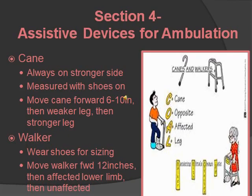For canes, always hold the cane on the stronger side — the mnemonic is 'COAL: Cane Opposite Affected Leg.' Measure with shoes on. When moving, advance the cane forward six to ten inches, then the weaker leg, then the stronger leg. For walkers, also measure with shoes on. Move the walker forward 12 inches, then the affected leg, then the unaffected leg.